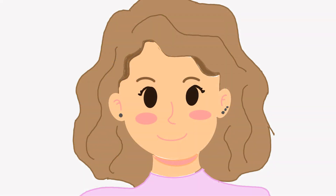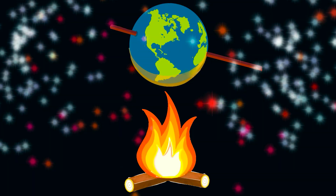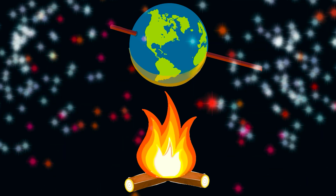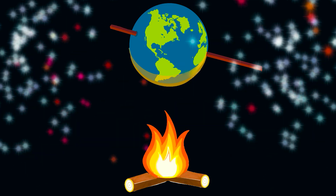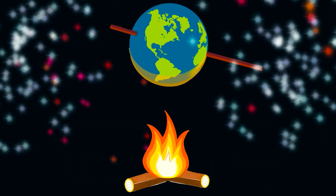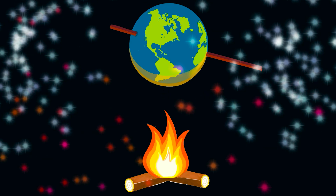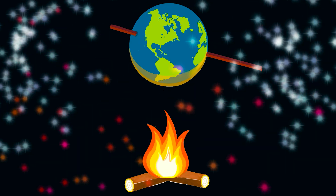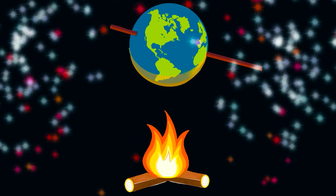The greenhouse effect is a natural process that warms the Earth's surface. When the Sun's energy reaches the Earth, some of it is absorbed and warms the planet. The Earth then radiates some of this heat back towards space. However, before all this heat can escape into space, it has to pass through the Earth's atmosphere.